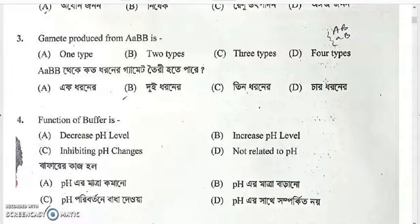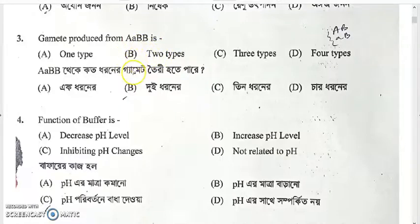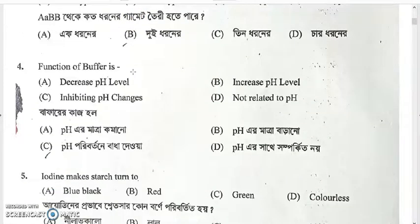Question number three: how many types of gametes are produced by the genotype AaBB? We use the formula 2 to the power n, where n is the number of heterozygous gene pairs. Here, Aa is heterozygous (n=1) and BB is homozygous, so 2 to the power 1 equals 2. The answer is two types of gametes — option B.